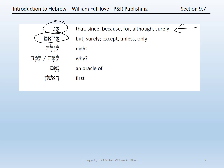Ki with eem — ki-eem — meaning but, surely, except, unless, only. Lila, night. Lama or lama — note the two different spellings. Nu-um, which glosses as an oracle of. And re-shown, the ordinal first.